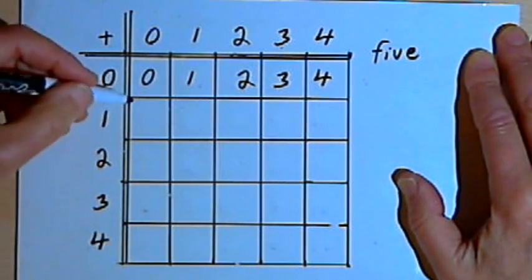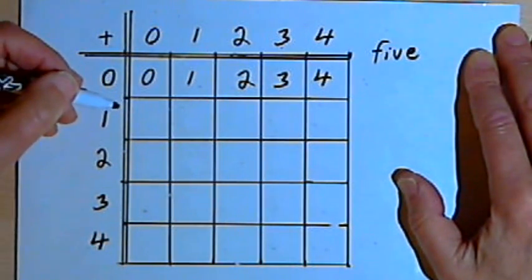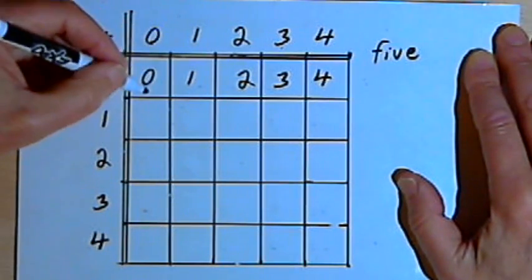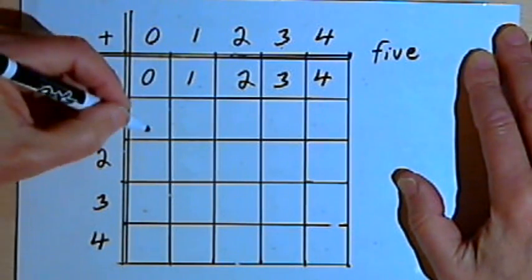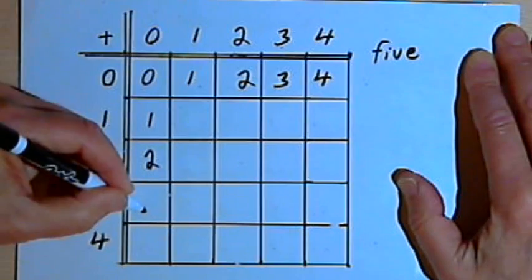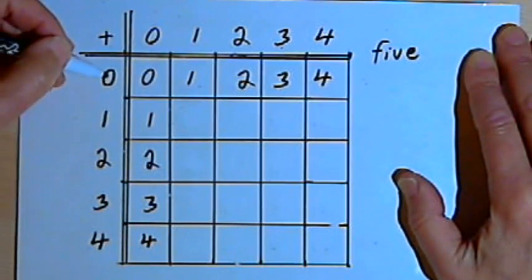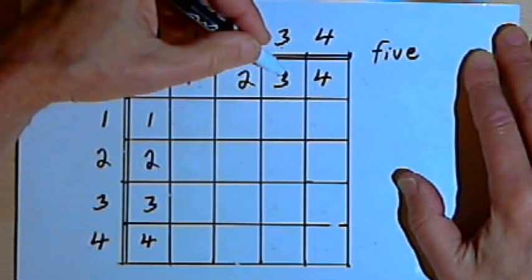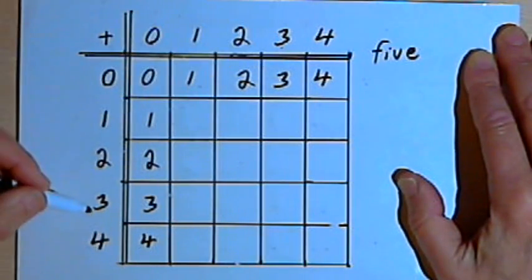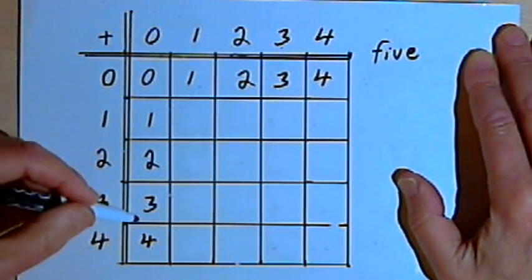Because I'm going to be combining the same two numbers just in the other order. So I can write in that 0 column 0, 1, 2, 3, and 4, which is like saying that 0 plus 3, which equals 3, is the same as 3 plus 0, which also equals 3.